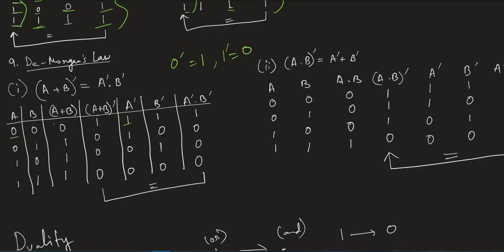Now A complement: 0 becomes 1, 0 becomes 1, 1 becomes 0, 1 becomes 0. B complement: 0 becomes 1, 1 becomes 0, 0 becomes 1, 1 becomes 0. Multiplying A complement into B complement: 1·1=1, 1·0=0, 0·1=0, 0·0=0. So the values are 1, 0, 0, 0.